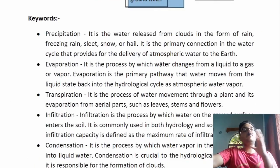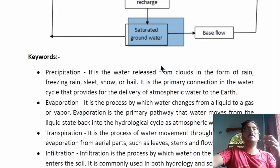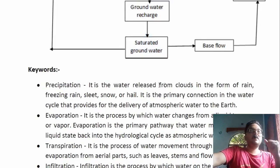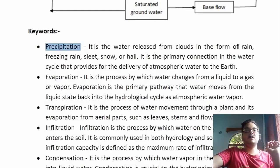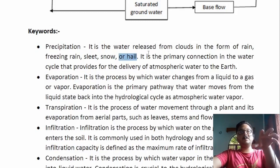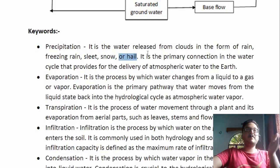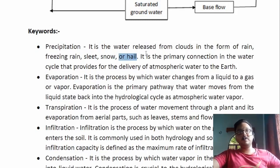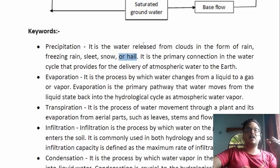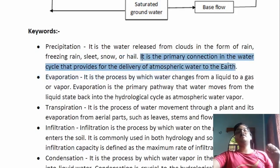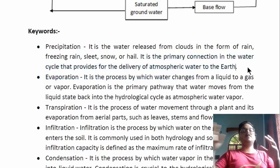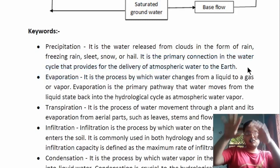Now the keywords encountered in the hydrological cycle: first is precipitation — it is the water released from clouds in the form of rain, freezing rain, sleet, snow, or hail. Different types of precipitation will be covered in the second chapter. Precipitation is the primary connection in the water cycle that provides delivery of atmospheric water to the Earth — it is the main thing that delivers atmospheric water to our Earth's surface.